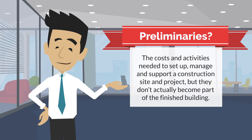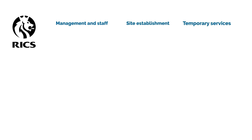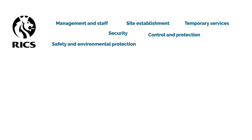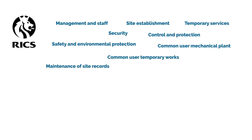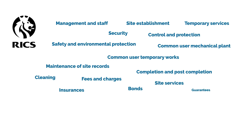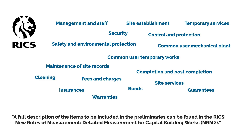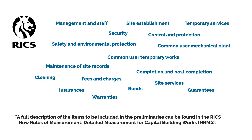But specifically, what are the costs included in preliminaries? According to RICS, this includes management and staff, site establishment, temporary services, security, safety and environmental protection, control and protection, common user mechanical plant, common user temporary works, the maintenance of site records, completion and post-completion requirements, cleaning fees and charges, site services, and insurance bonds, guarantees and warranties. A full description of the items included in the preliminaries can be found in the RICS New Rules of Measurement, Detailed Measurement for Capital Building Works, NRM 2.